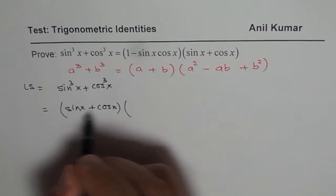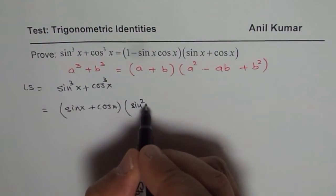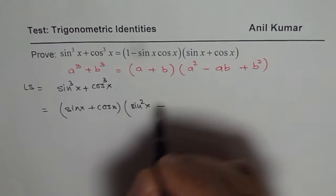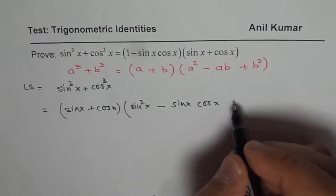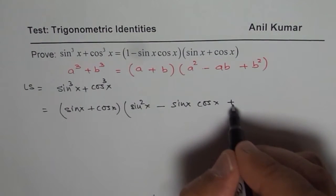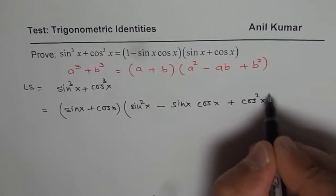times a², which is sin²x, minus ab, which is sin x cos x, plus b², which is cos²x. Do you see that?